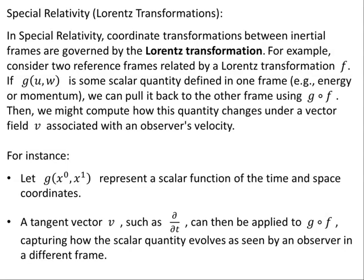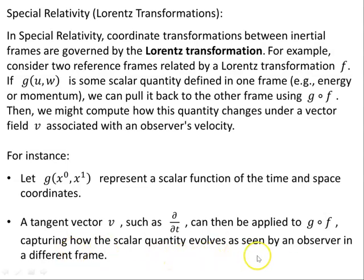In the next video I'll show an example in special relativity. Coordinate transformations between inertial frames are governed by the Lorentz transformation. If G is some scalar quantity — such as energy or momentum — defined in one frame, we can pull it back to the other frame using G∘F. A tangent vector V, such as ∂/∂t, can then be applied to G∘F, capturing how the scalar quantity evolves as seen by an observer in a different frame.